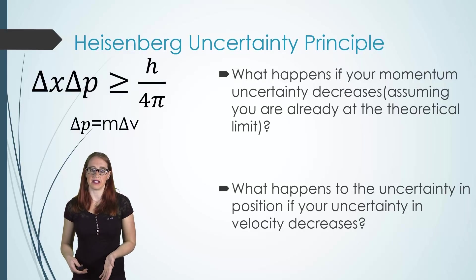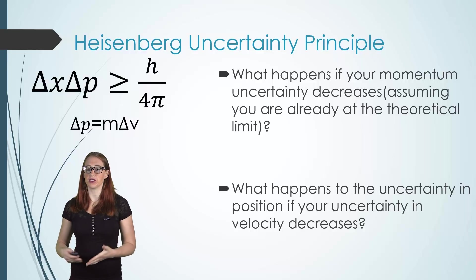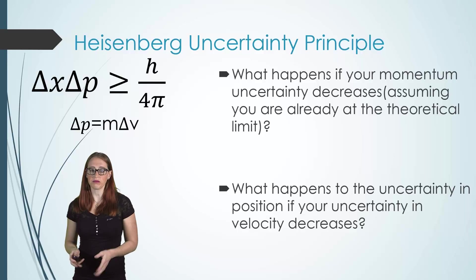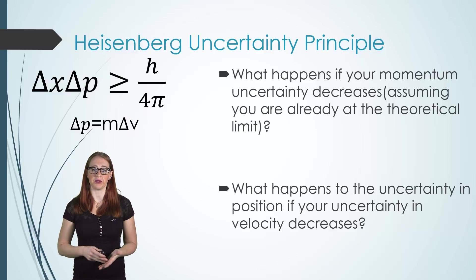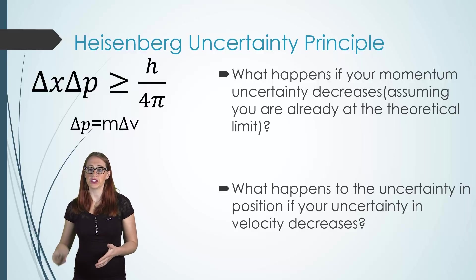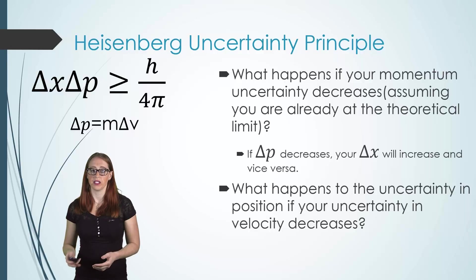So now let's state this in a different way with some questions to help out. What is going to happen if the uncertainty in your momentum decreases, assuming that you are already at the theoretical limit? If you need a moment to think, just pause the video and come back. This would mean that you know your momentum to a more precise value than you did before. And if you are already near to that theoretical limit, your uncertainty in position must increase. Of course, the reverse would be true.